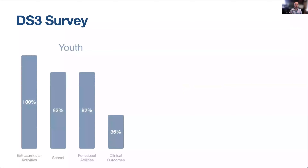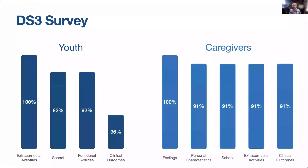Lastly, I want to share the results of the survey. From the youth survey asking what type of information they'd want to compare, what was interesting is that they were really interested in comparing what extracurricular activities their peers were participating in and how they're doing in school, but very few actually wanted to compare clinical outcomes. This is in comparison to their caregivers, who basically wanted to compare everything — including how their children were feeling, but they also really did want to look at clinical outcomes. This suggests we might need to create different iterations depending on our audience.